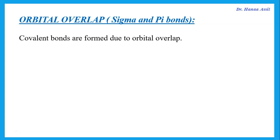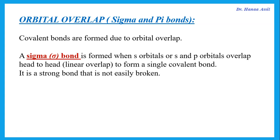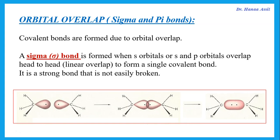We know that covalent bonds are formed due to sharing of electrons. Now, if these electrons are in s orbitals, or s and p orbitals, they overlap. In order to share the electrons, this overlap between s orbitals, or s and p orbitals, happens head-to-head. That means linear overlap, or along the x-axis, they will overlap in order to share the electrons. This kind of overlap is called a sigma bond.